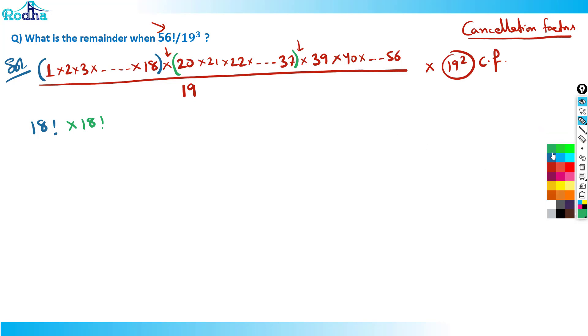Then 20 to 37, can I say that it is again 18 factorial? Why? Because 20 by 19 remainder is 1, 21 by 19 remainder is 2, 22 by 19 remainder is 3, till 37 by 19 remainder is 18. So it's somewhat again 1 to 18, again becomes 18 factorial here. Then again, look at this, 39 to 56 is there. 39 by 19, the remainder is 1, 40 by 19 remainder is 2, till 56 by 19 remainder is again 18. This third also becomes 18 factorial.